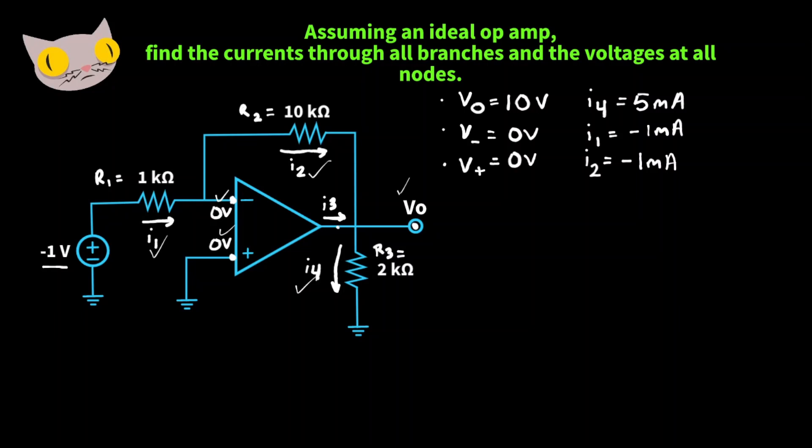Lastly, let's find this current here, I3, that's at the output of the op amp. If we apply Kirchhoff's current law, we should be able to see that I2 plus I3 minus I4 should equal to 0. So I3 should equal to I4 minus I2. That's going to give us I4 5 milliamps minus negative I2 1 milliamp, giving us a value of 6 milliamps.